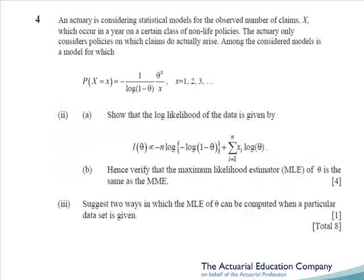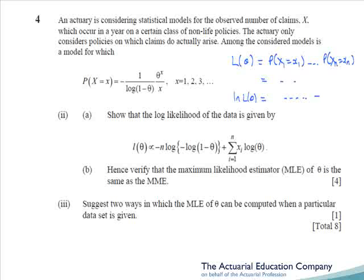For part two we need to get the log likelihood. For the non-standard distribution, our likelihood function is simply the probability that our first sample value is x1 times all the way up to our last sample value is xn. Substituting those in, simplifying, and then logging it will give us the log likelihood. However, what we'll get is the given expression take away the log of the product of all the xi's — so it's not actually proportional to what they've given since we're subtracting a constant rather than multiplying it, but that shouldn't be too much bother.